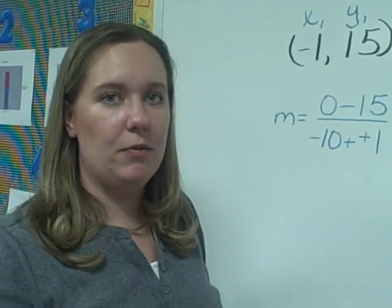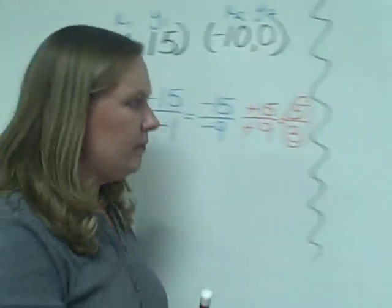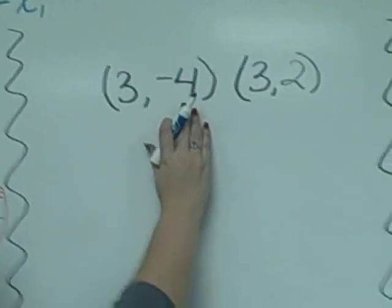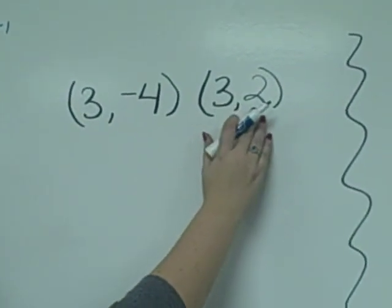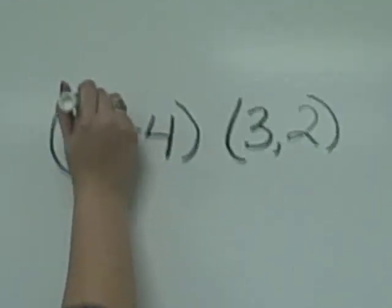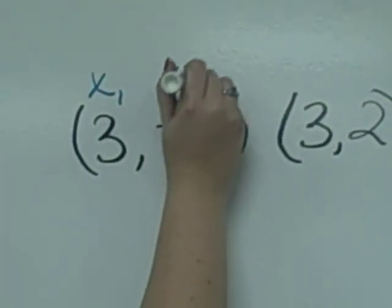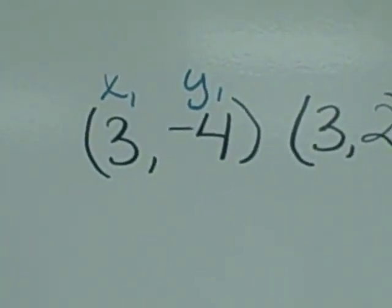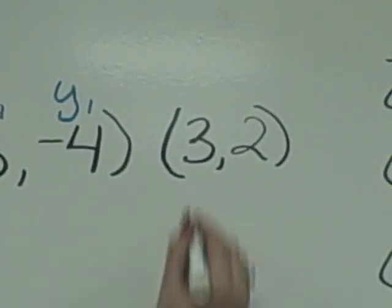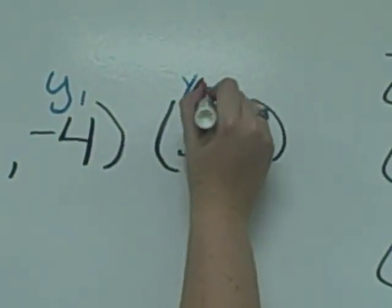Let's look at another ordered pair. 3, negative 4, and 3, 2. First, we will label our x1 and y1. And then the next ordered pair will be x2 and y2.